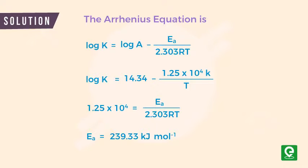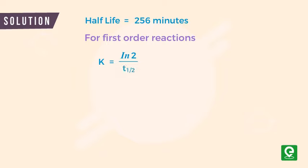Second, find temperature when half-life is equal to 256 minutes. For first order reactions, K is equal to ln 2 divided by T half. Substituting values and simplifying, we get K equal to 0.693 by 256 times 60, that is equal to 4.5 times 10 to the power minus 5 per second.